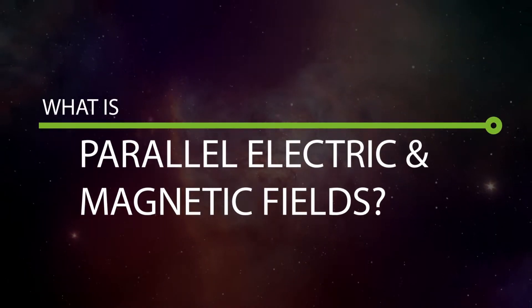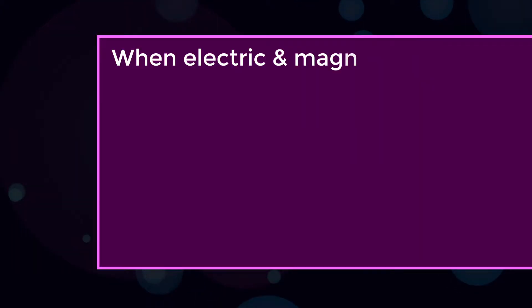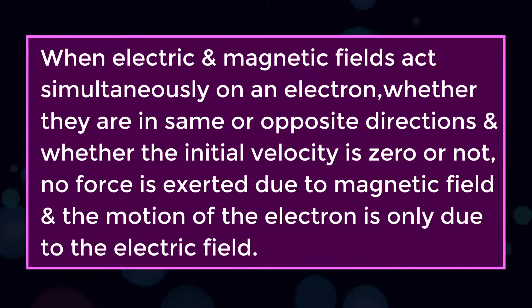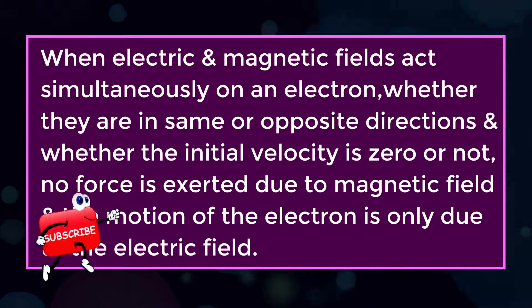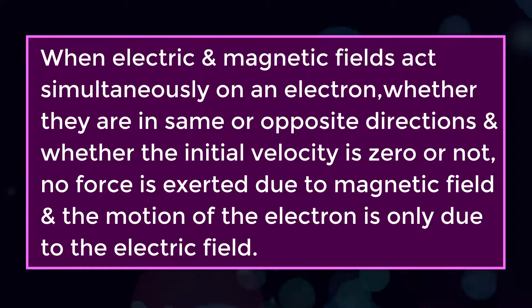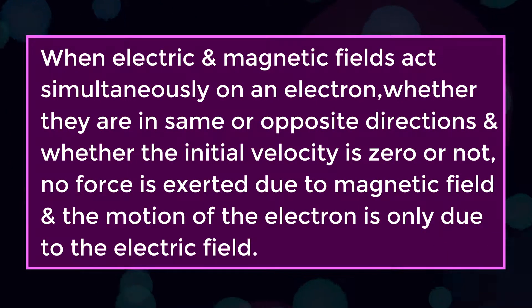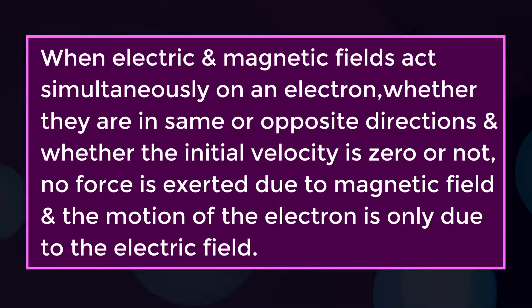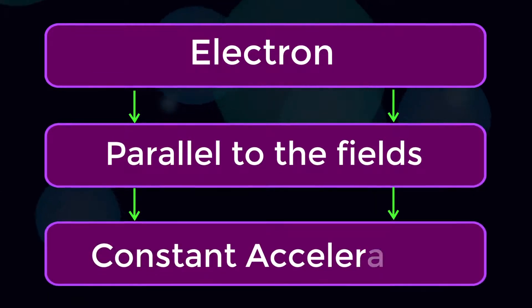What is parallel electric and magnetic fields? When electric and magnetic fields act simultaneously on an electron, whether they are in same or opposite directions and whether the initial velocity is zero or not, no force is exerted due to magnetic field and the motion of the electron is only due to the electric field.